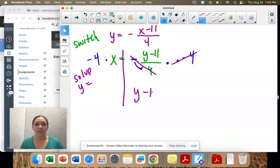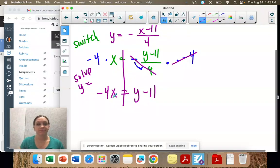So I have y minus 11, and that negative is now on the other side with the 4 and the x. We got rid of the fraction. That was the hard part.